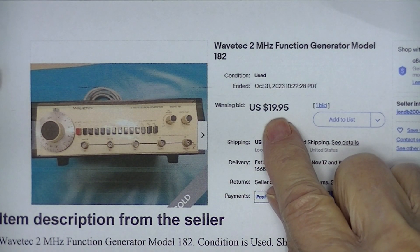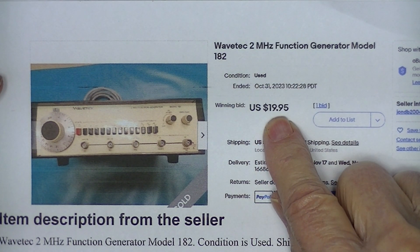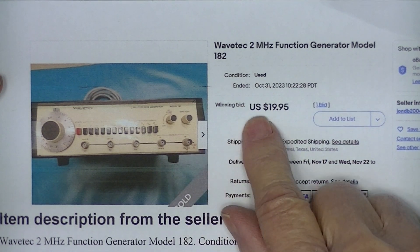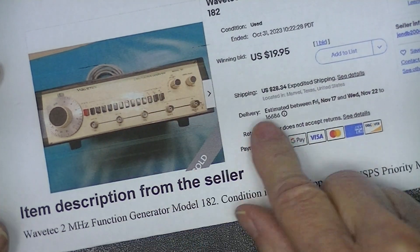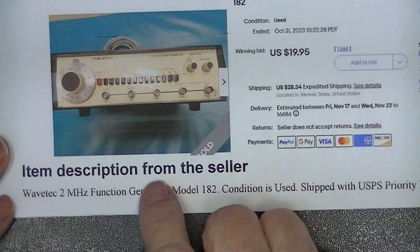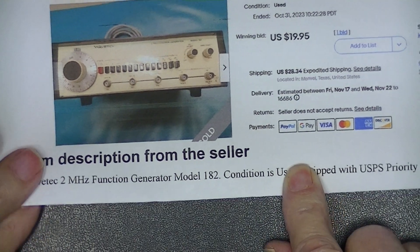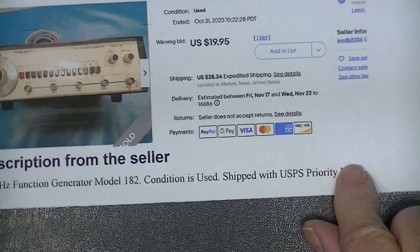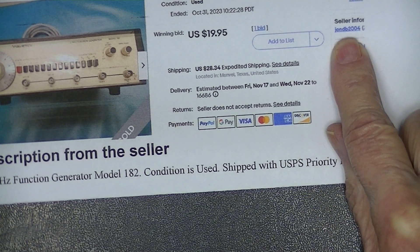This was an auction. I was the only bid - this was the starting and finishing bid which looks good, except the shipping price was $20.34. So all in all, this thing cost me, with tax, about 50 bucks. This is the only description, and this was the seller J-O-N-D-B 2004.